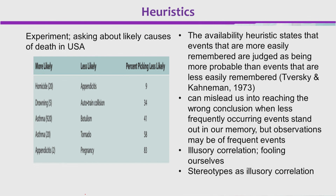jub kam hone wali waakiyat jo hai, humari zyada stand out karti hai, hum us ko zyada frequent observe karte hain. Toh hume aise lagta hai yeh zyada hota hoga — yeh illusory correlation ke halat hai.